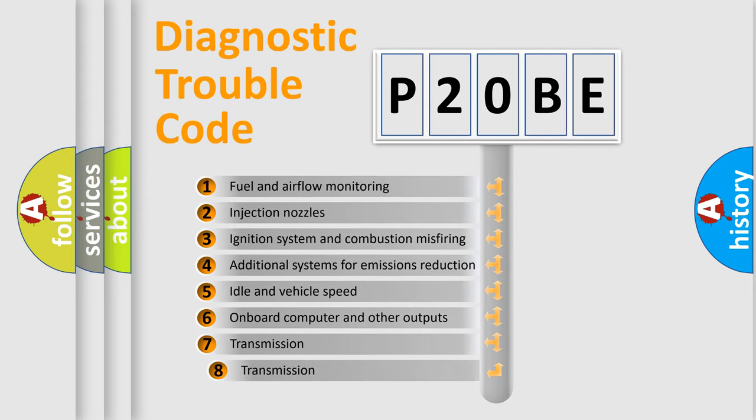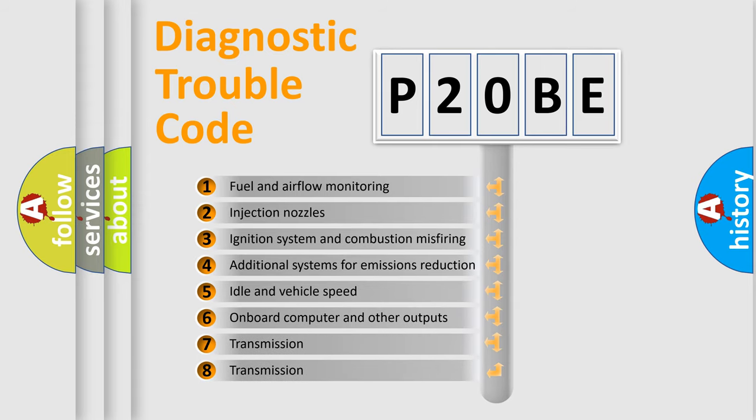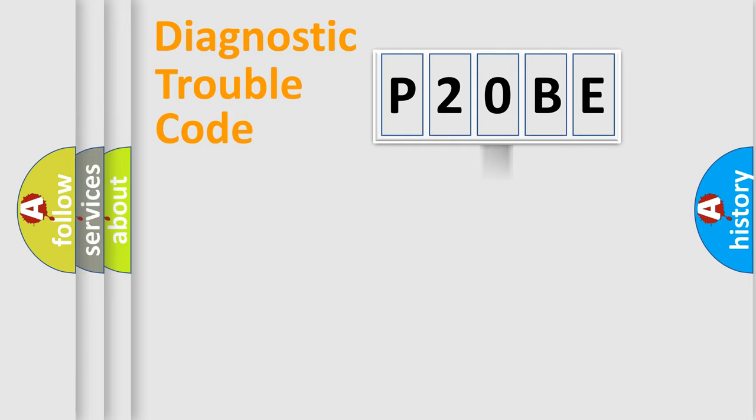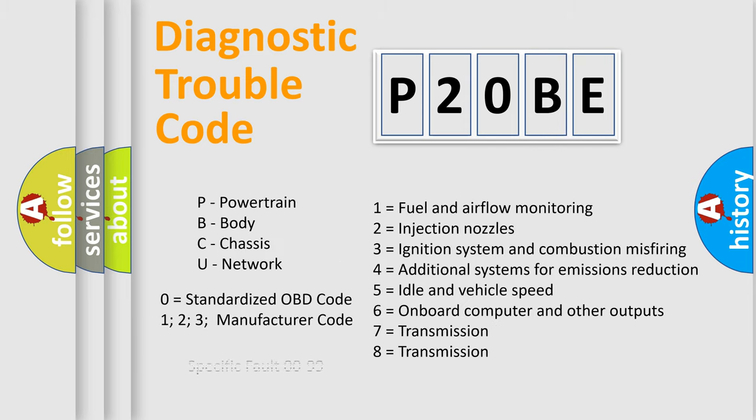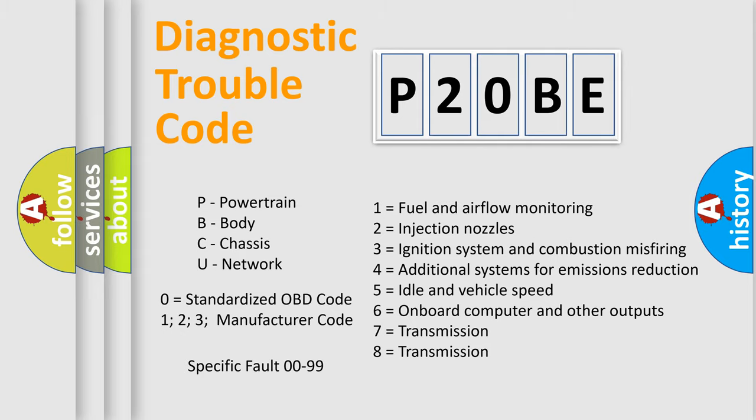The third character specifies a subset of errors. The distribution shown is valid only for the standardized DTC code. Only the last two characters define the specific fault of the group. Let's not forget that such a division is valid only if the second character code is expressed by the number zero.